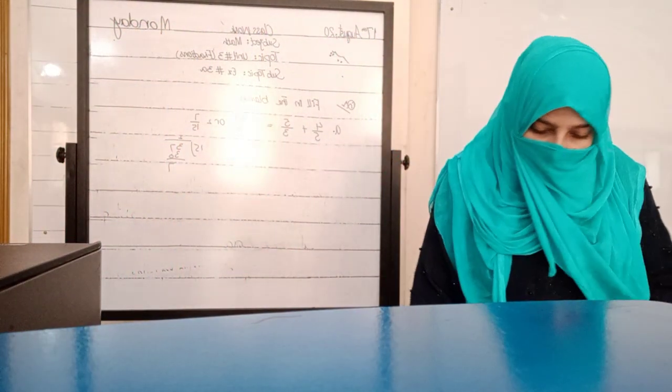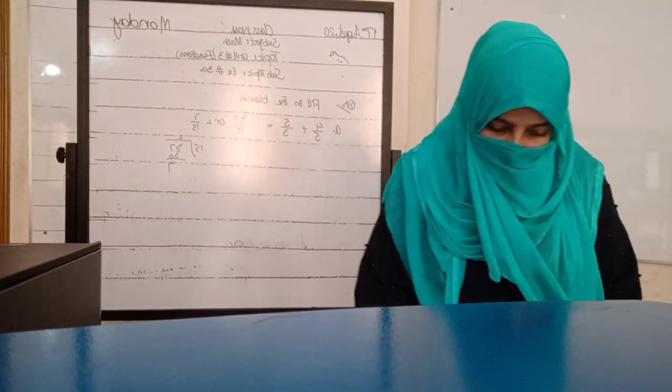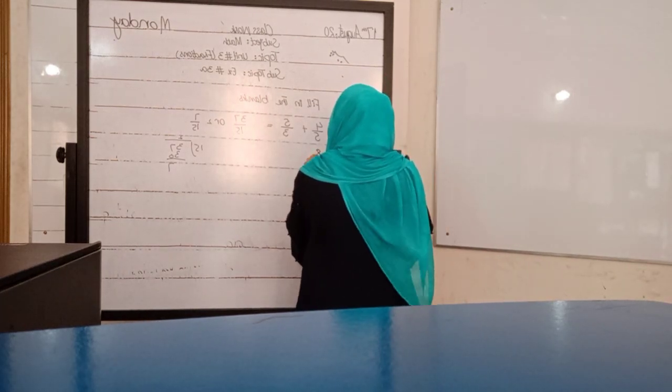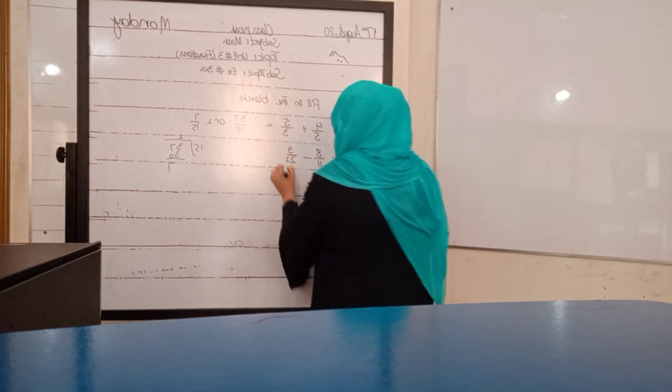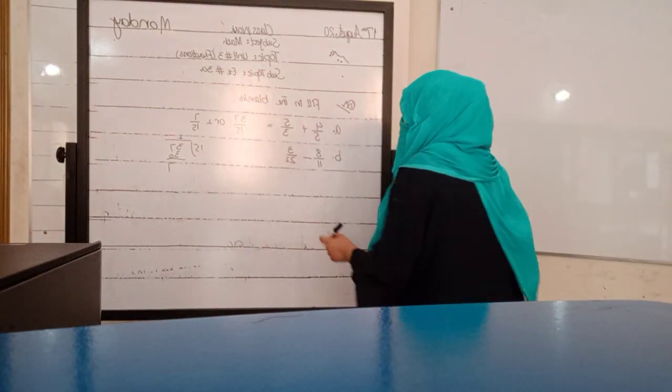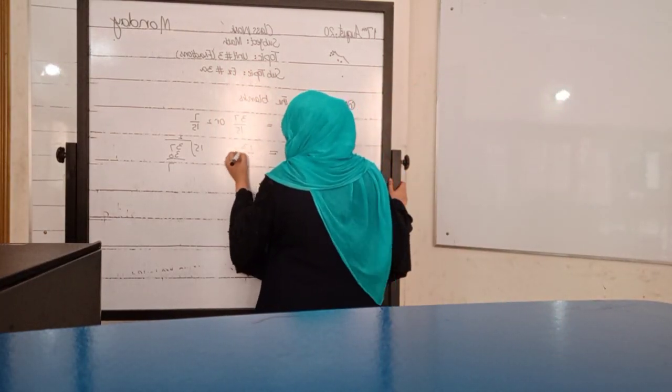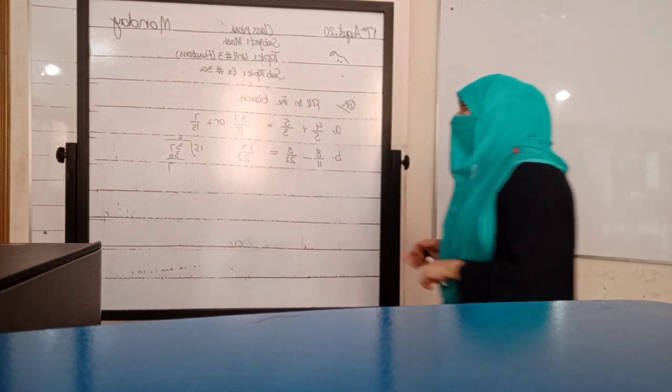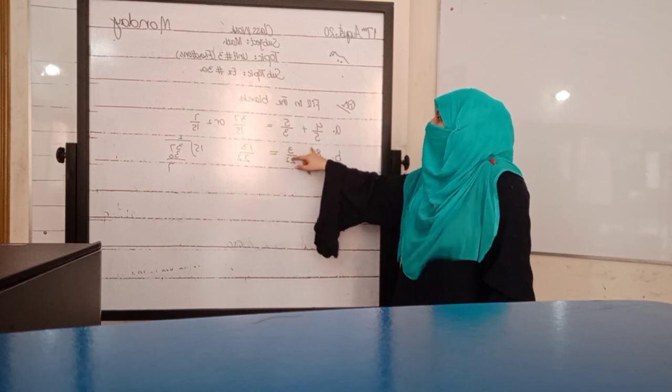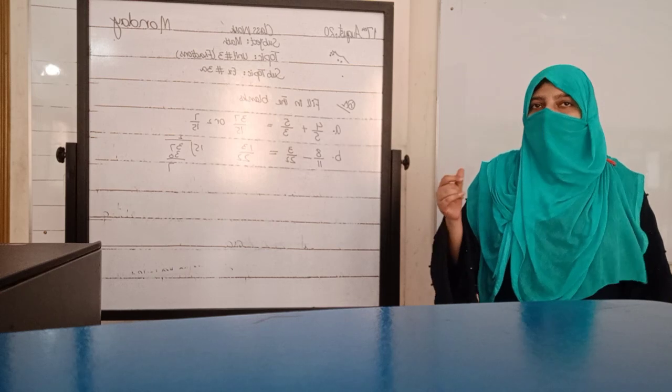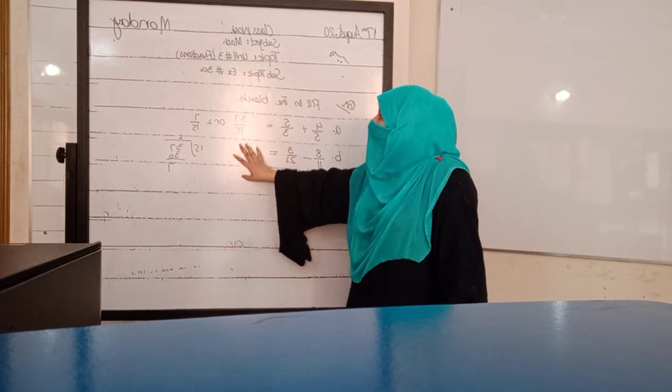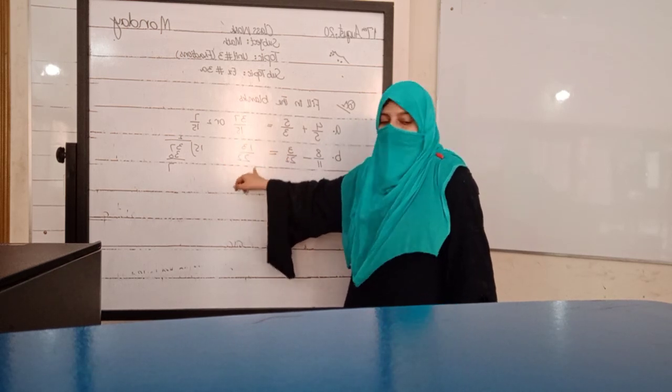Now second one is 8 over 11 minus 3 over 22. This has the same procedure. Substitute, take LCM of denominators. Answer is 22. Then the answer is 13 over 22. This fraction is already in lowest terms because 13 is smaller than 22.